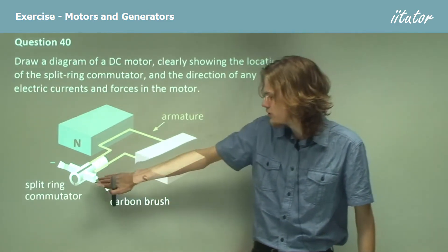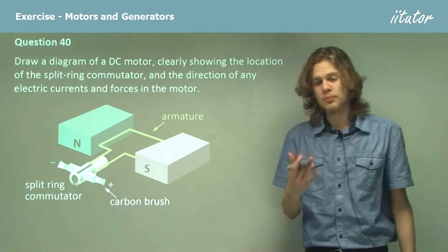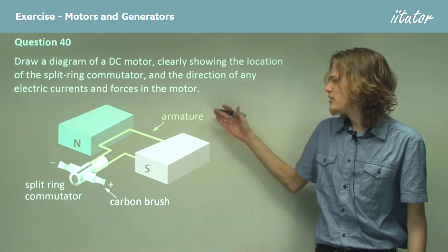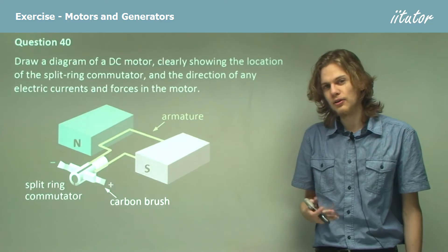So we have the carbon brushes over here, connected to the split ring commutator. We have the armature or rotor in the presence of the magnetic field.